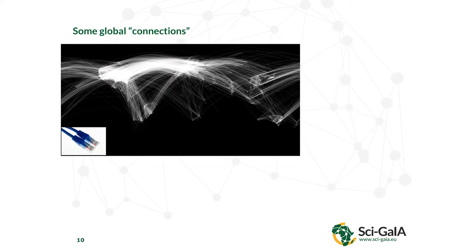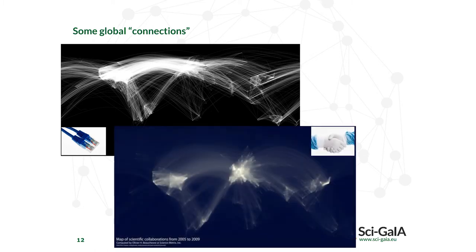I'd like to show you some connections. First, network connections. This depicts the wire and fiber connections across different continents. You can see huge links between North America, Europe, and Japan, something in South America, but you can barely see Africa. This has improved and will improve thanks to projects like Africa Connect and Africa Connect 2, but there is still a huge gap to be bridged — and this gap exists not only in physical connections but also in scientific connections.